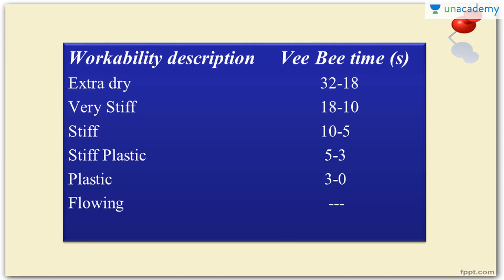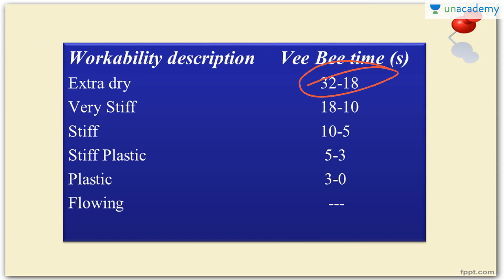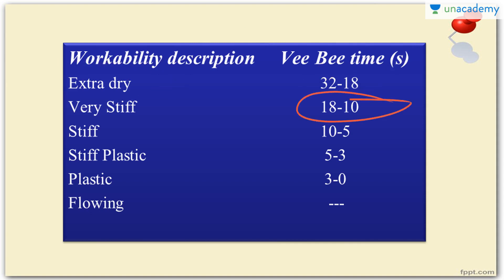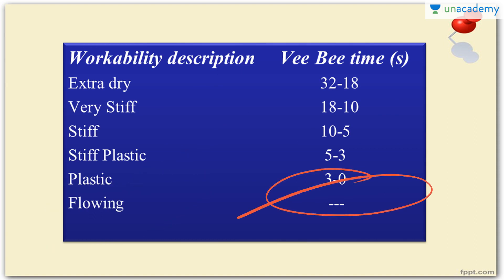Now let's see the inferences from the results. These are workability descriptions versus VB time in seconds. If the VB time falls in the highest range it is called extra dry; 18 to 10 seconds is very stiff; 10 to 5 seconds is stiff; 5 to 3 seconds is stiff plastic; and 3 to 0 seconds is plastic or flowing, where we cannot accurately measure the time.